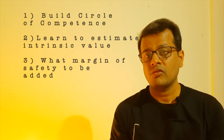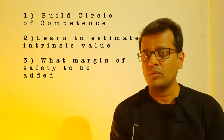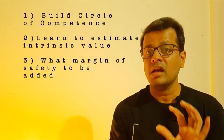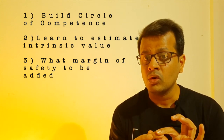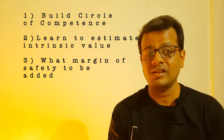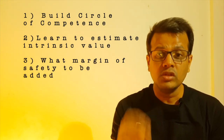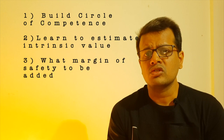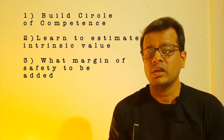In value investing, there are three very critical things a common man must develop. First, they should build their circle of competence. Second, they must learn how to estimate intrinsic value. And third, they must know what margin of safety to add to their calculated intrinsic value to buy a stock which is almost foolproof — it is not going to make you a loss. Practicing these three things will help you practice value investing more profitably.